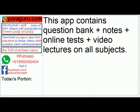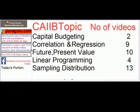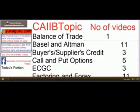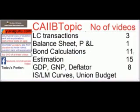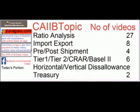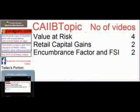This app contains question banks, notes, online tests, video lectures, and news. Topics available include: Capital Budget and Correlation, Future and Present Values, Linear Programming, Sampling Distribution, Balance of Trade, Buyer's Credit, Supplier's Credit, Call and Put Options, ECGC, Factoring, LC Transactions, Balance Sheets, P&L, Bond Calculations, GDP, GNP, Deflator, IS-LM Curves, Union Budget, Ratio Analysis, Import-Export, Pre- and Post-Shipment, Tier 1 and Tier 2 Capital, CRAR, Basel 2, Horizontal and Vertical Disallowances, Value at Risk, and more.